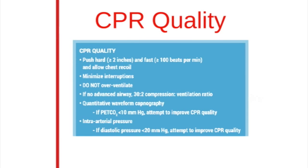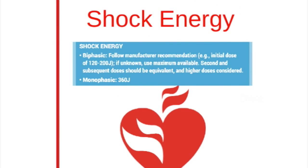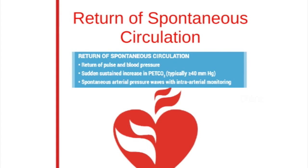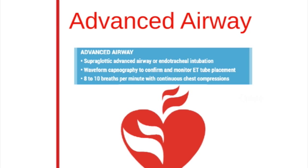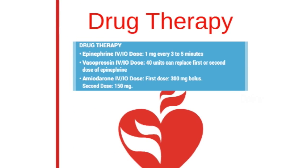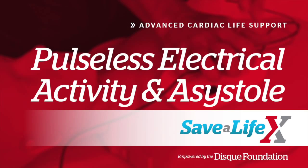Next we have CPR quality, an important chart to remember any time practicing proper ACLS. Shock energy is also a key component to ACLS. Next are the identifications for return of spontaneous circulation. Here is the section covering advanced airway. Drug therapy includes these doses and types. That concludes our lesson for pulseless electrical activity and asystole.